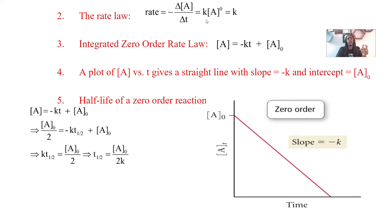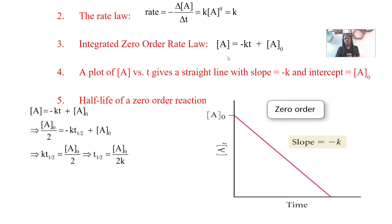For zero order, the differential rate law is rate = k[A]⁰, which simplifies to rate = k. The integrated rate law for zero order is: [A] = -kt + [A]₀. This is different once again — notice there are no natural logs at all. It's simply the concentration equals negative k times time plus the initial concentration.